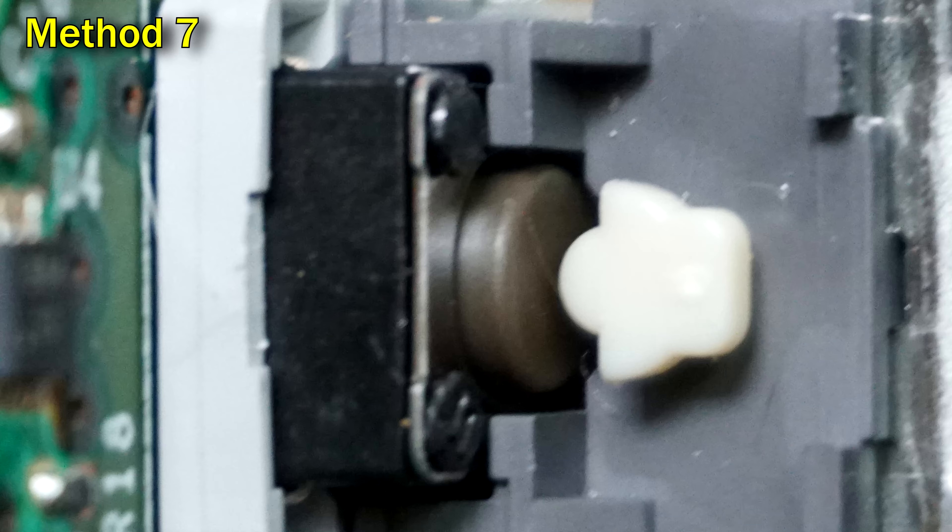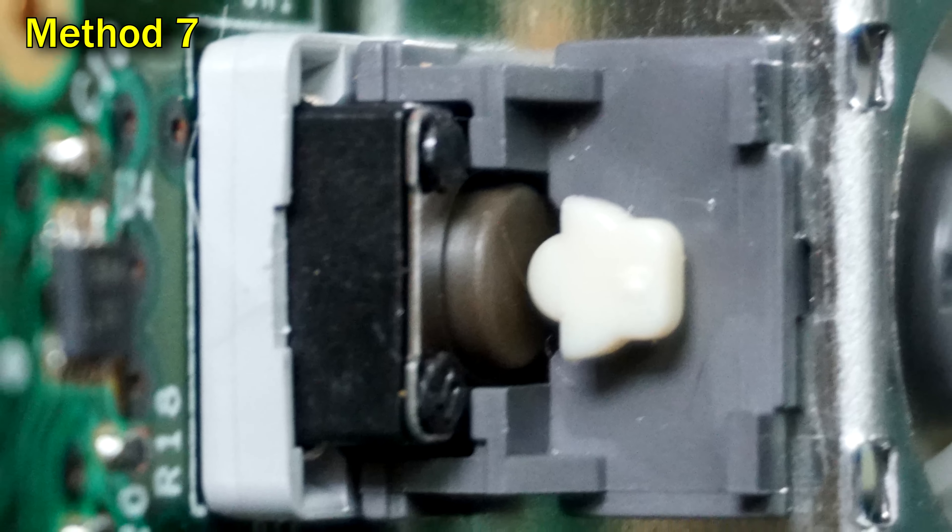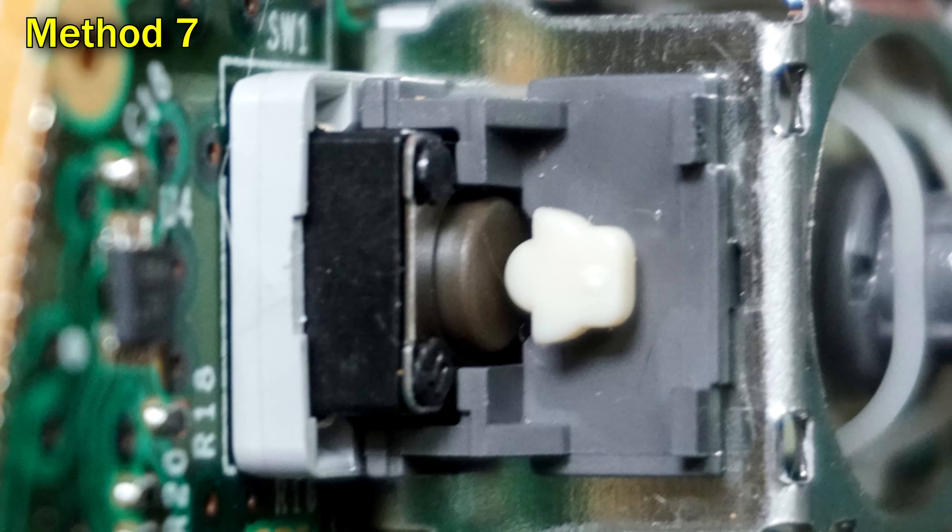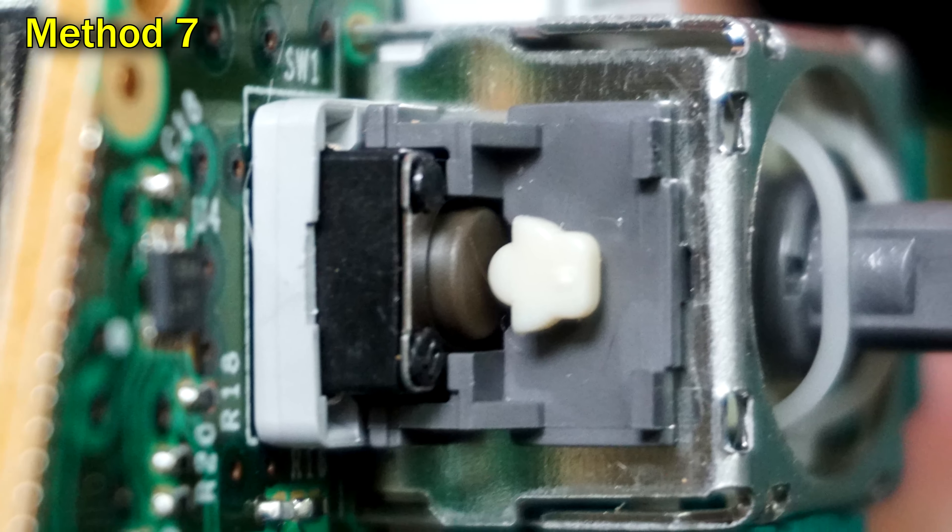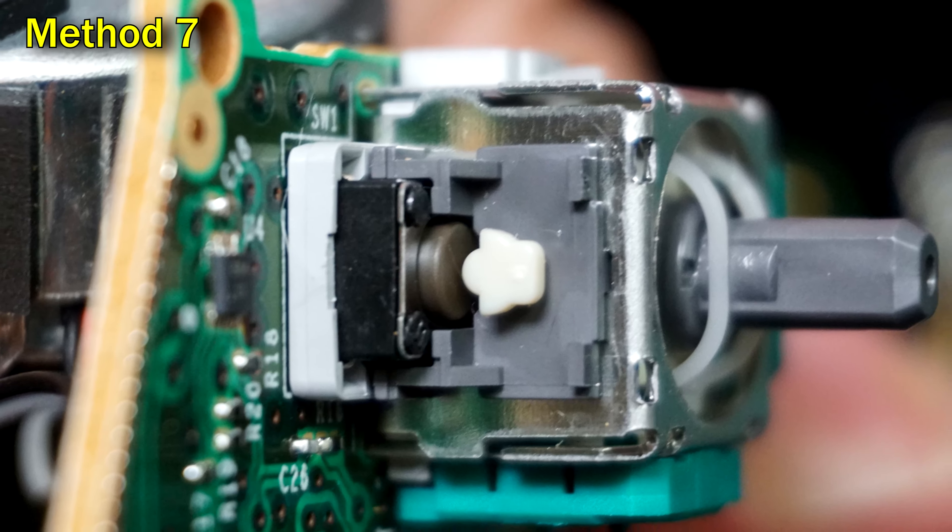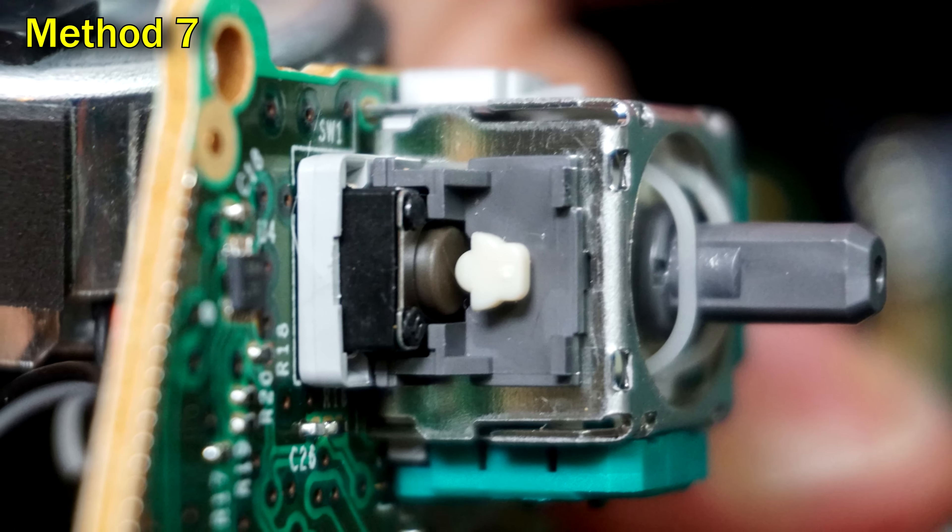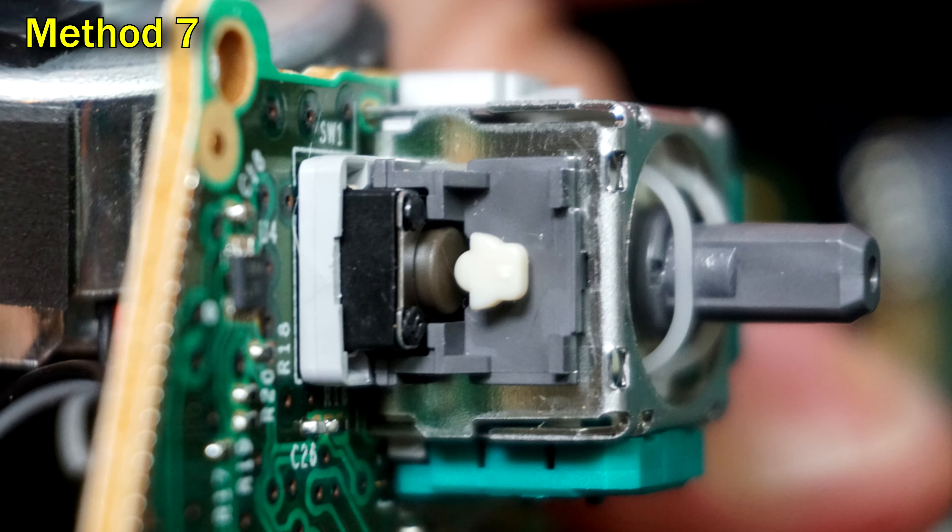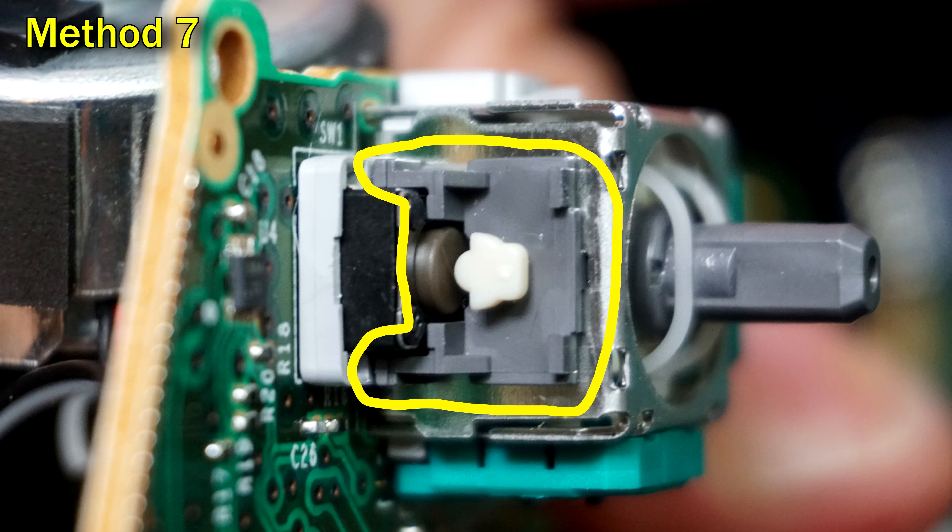Method seven is very experimental and very risky. But if everything else has failed, and you're going to throw the controller away anyway, you may want to try this as a last resort. I have not done this, and I'm not actually going to show myself doing it. A small percentage of people have had some success by removing this gray little tab that goes around this white thing right here. One common way to do it is to take needle nose pliers and just snap it out of there.